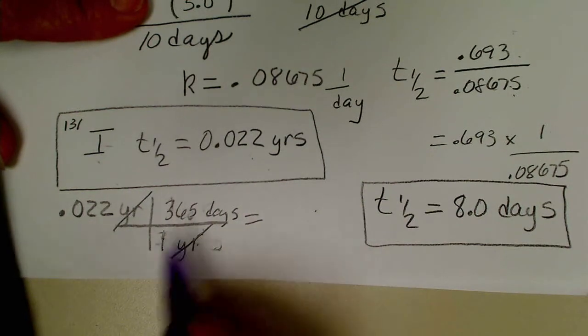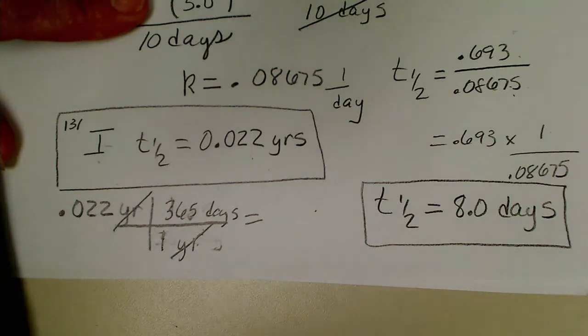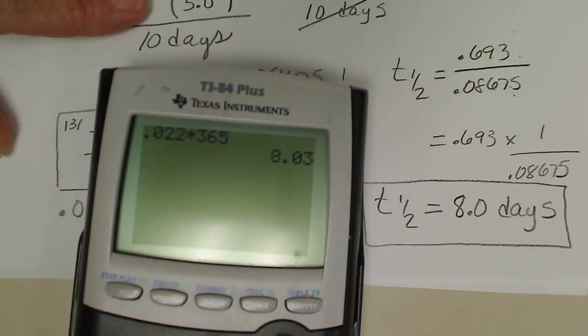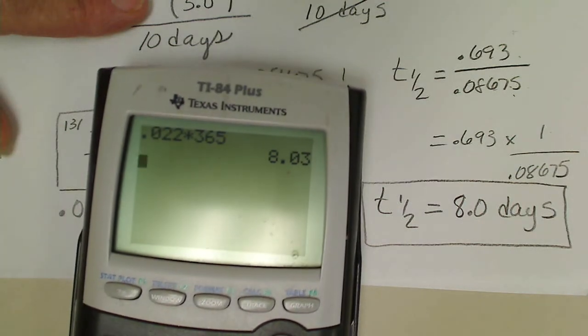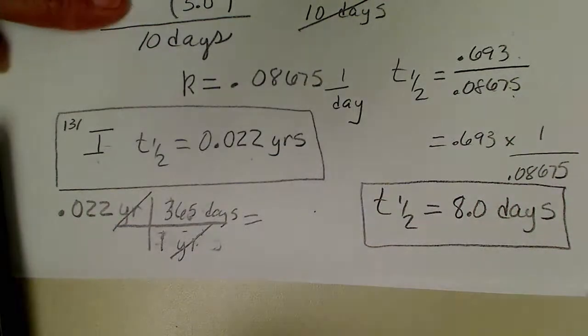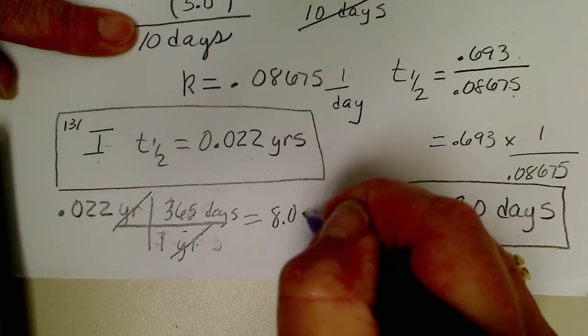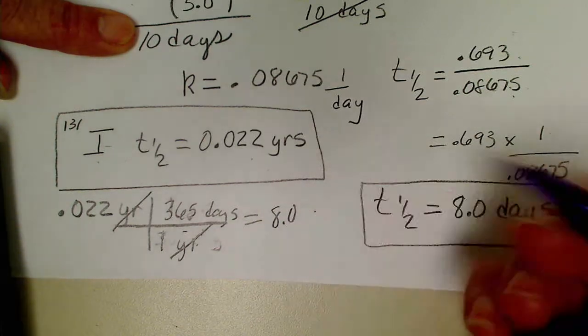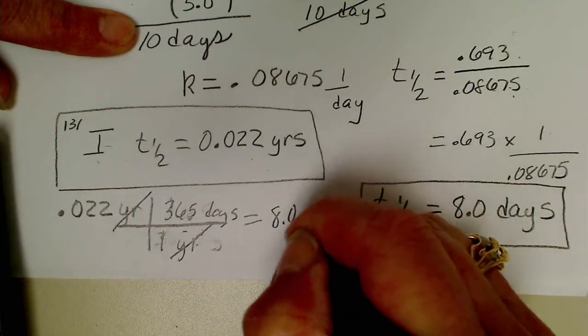I always show units just so I can see when I make a silly mistake. 0.022 times 365, yeah that's better. So that turns into 8.03 days, and I will just write 8.0 days.